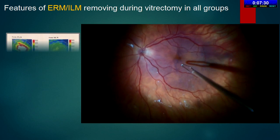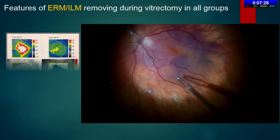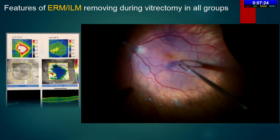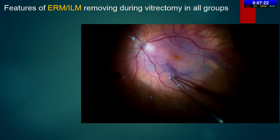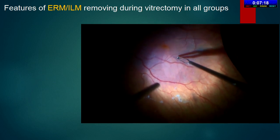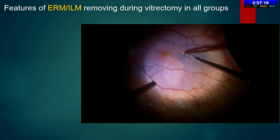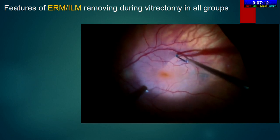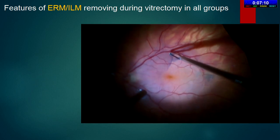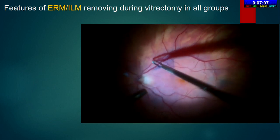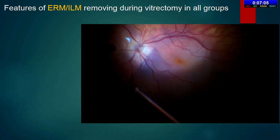We want to demonstrate the ERM and ILM removal features in different groups of patients. In the first group, all membranes were removed separately from the ILM. After dual blue staining, we first created an ERM flap with 25-gauge forceps, peeled off the ERM as a large whole piece passing through the fovea, and then performed macular axis ILM peeling.